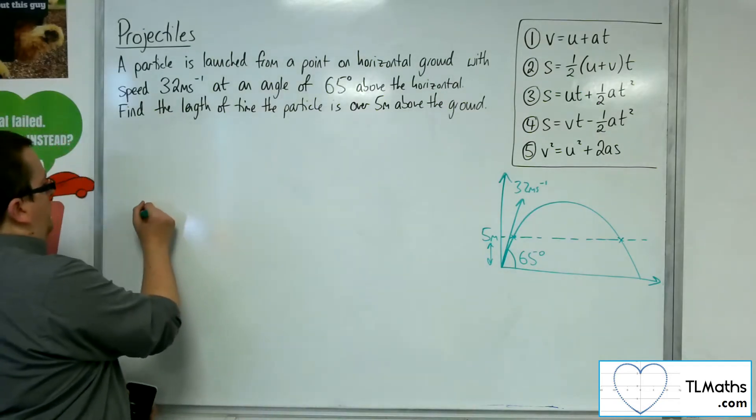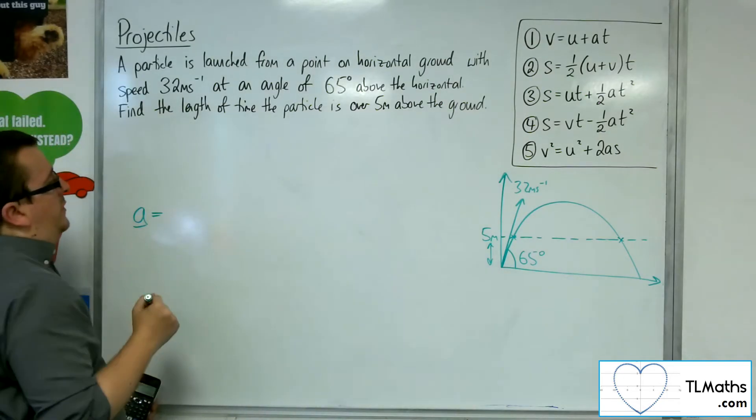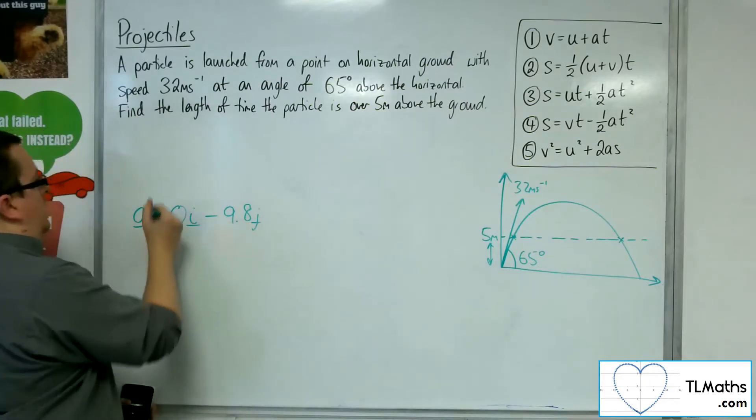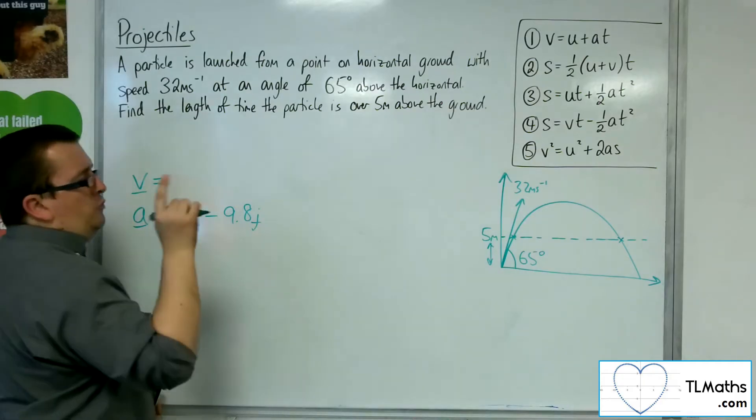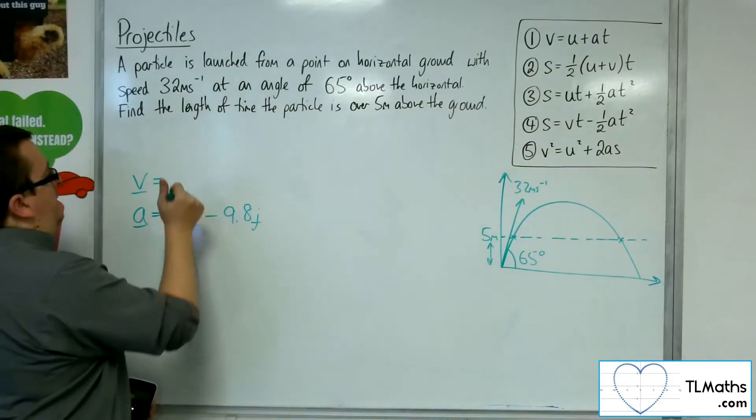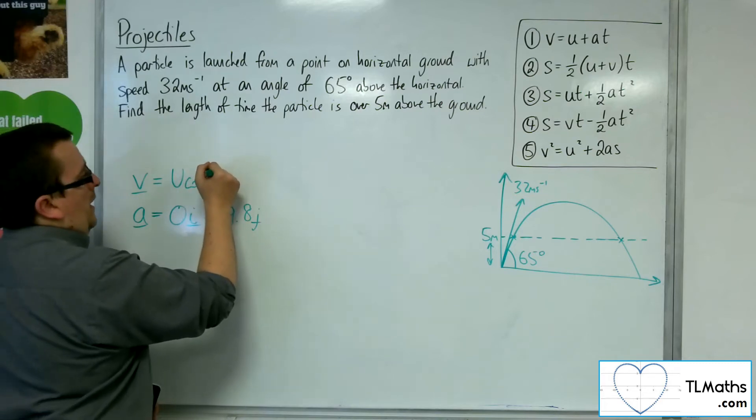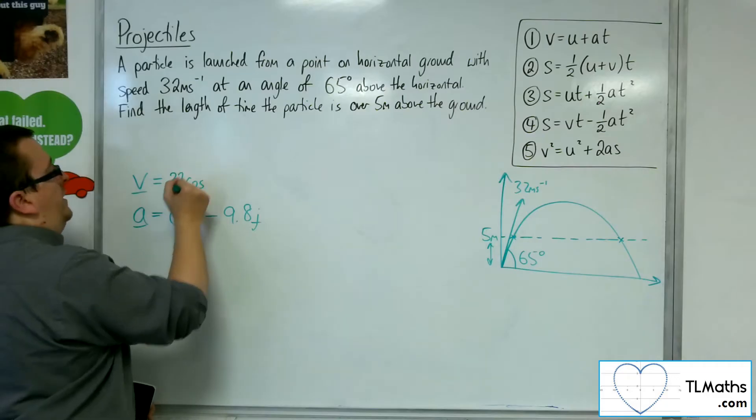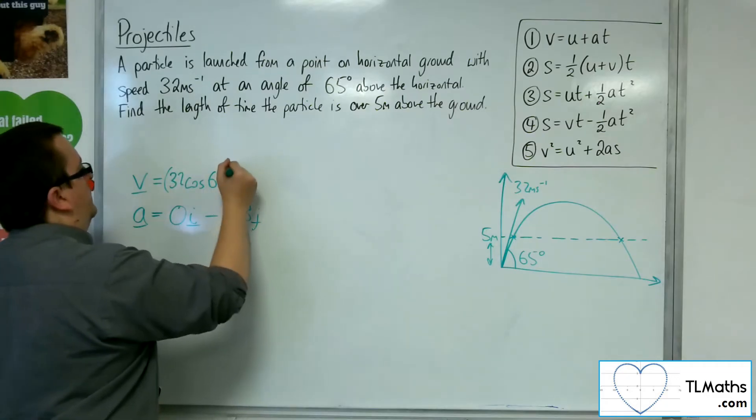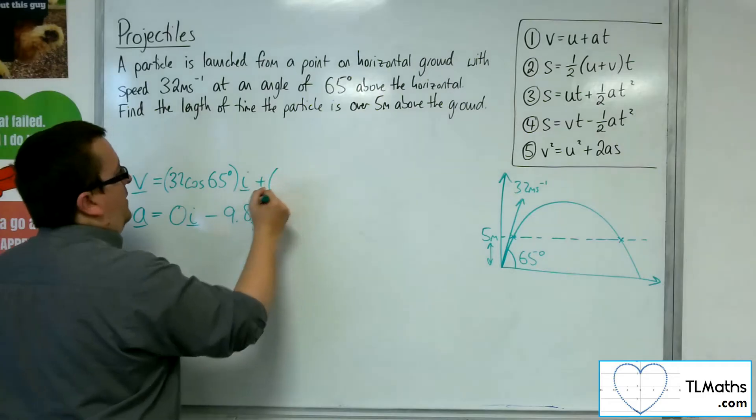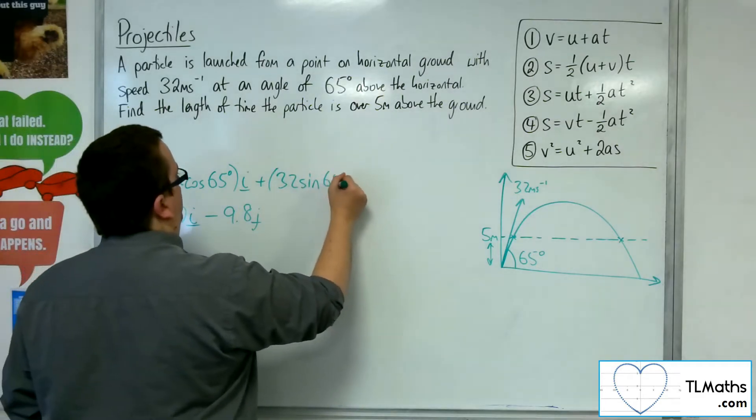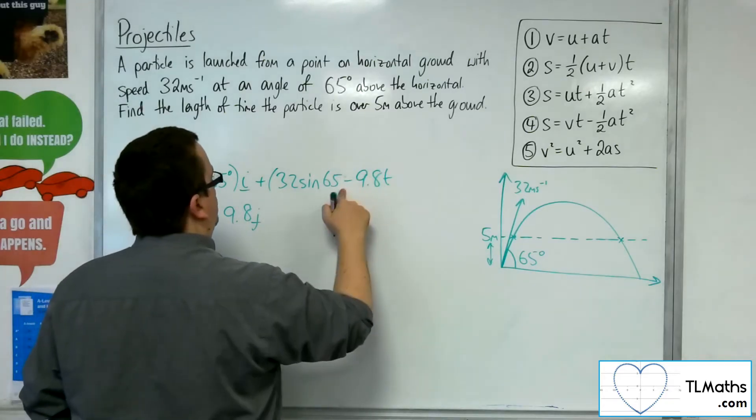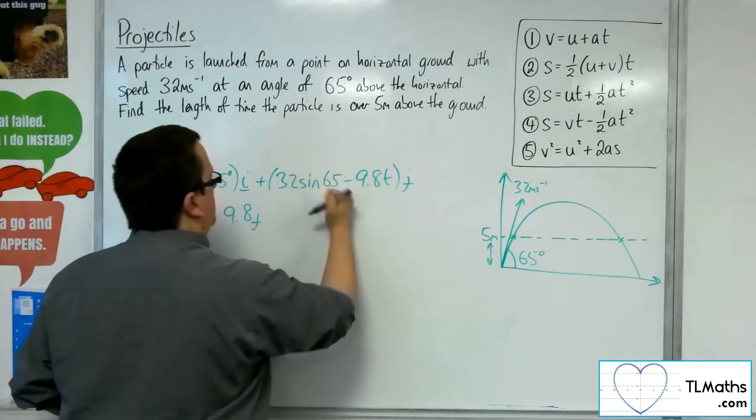So, first of all, A. So the acceleration is 0i minus 9.8j. Now integrating, introducing the initial conditions for the velocity. So 32 cosine, my general terms here. So 32 cosine 65i and then we've got the 32 sine 65, take away the 9.8tj. There we are.